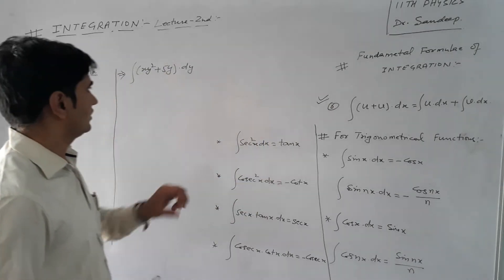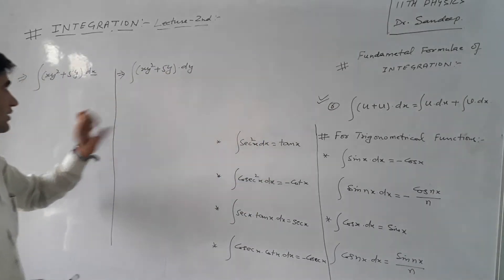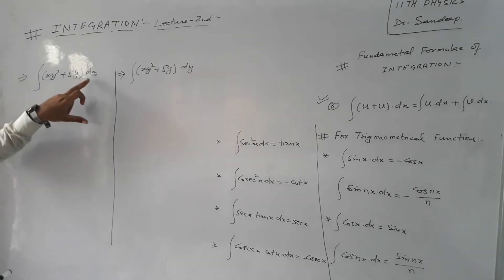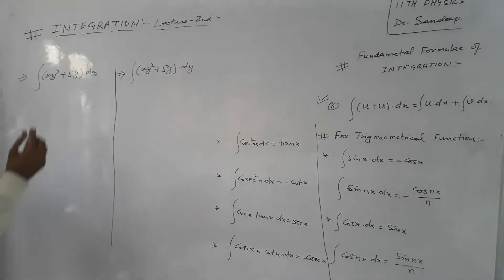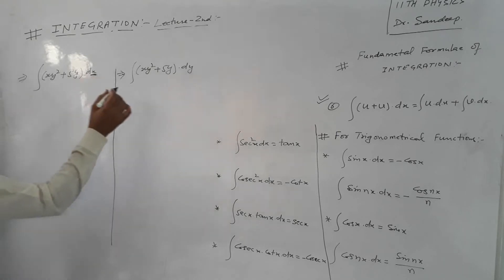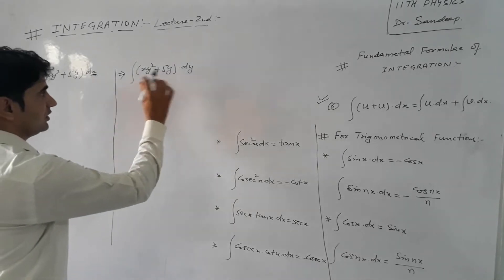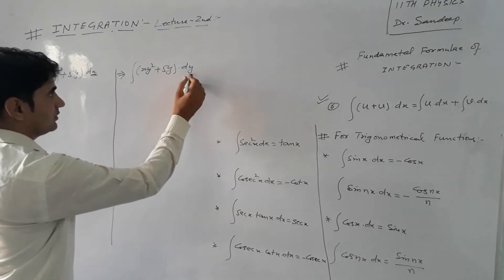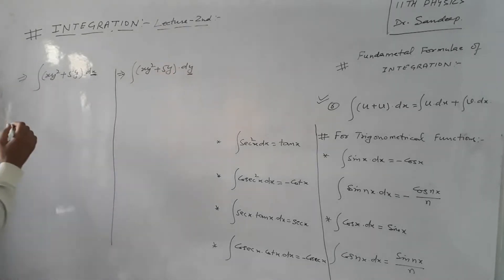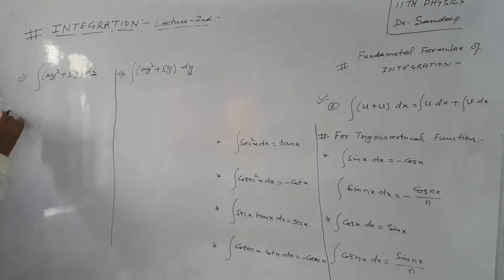For example, if we talk about this identity, we will discuss this question. The integral of x squared plus 5y into dx. So if we ask that, we will use x to integrate. But in this question, the function has y, and we will change the value as y. So what should we do? What is the solution? We will use the integral operator on the separate terms.